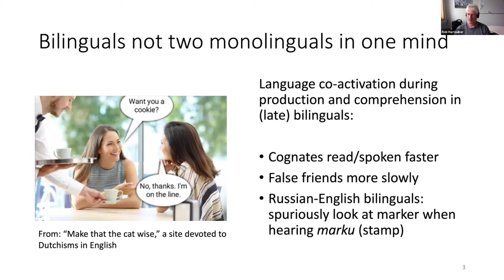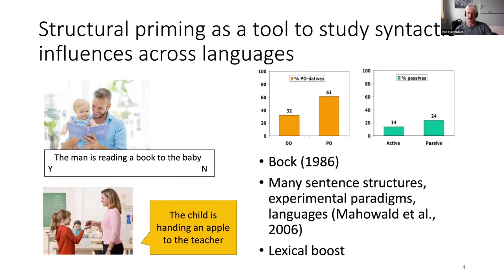So the two languages of bilinguals seem to interact at the level of the lexicon. But what about the sentence level? If there are cross-language influences at the sentence level, you might expect phenomena like a Dutch-English bilingual using a Dutch sentence structure in English. In my approach we use an experimental technique — structural priming — to study syntactic influences across languages and to control such influences.